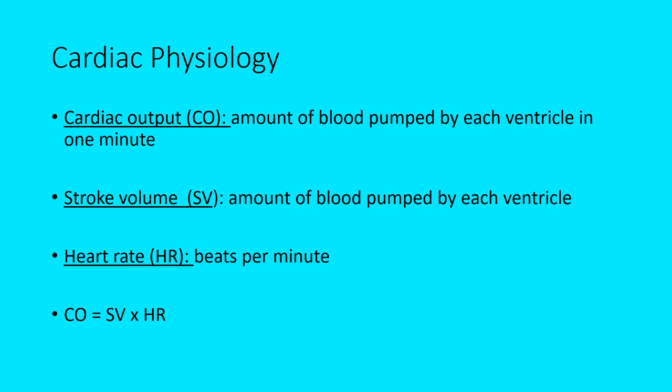Cardiac physiology: cardiac output (CO) is the amount of blood that each ventricle pumps per minute. Stroke volume is the amount of blood pumped by each ventricle per beat. Heart rate is the number of beats per minute. You can calculate cardiac output by multiplying stroke volume times heart rate. Different things can affect the heart rate — the autonomic nervous system, hormones, fitness level, age — all play a role.